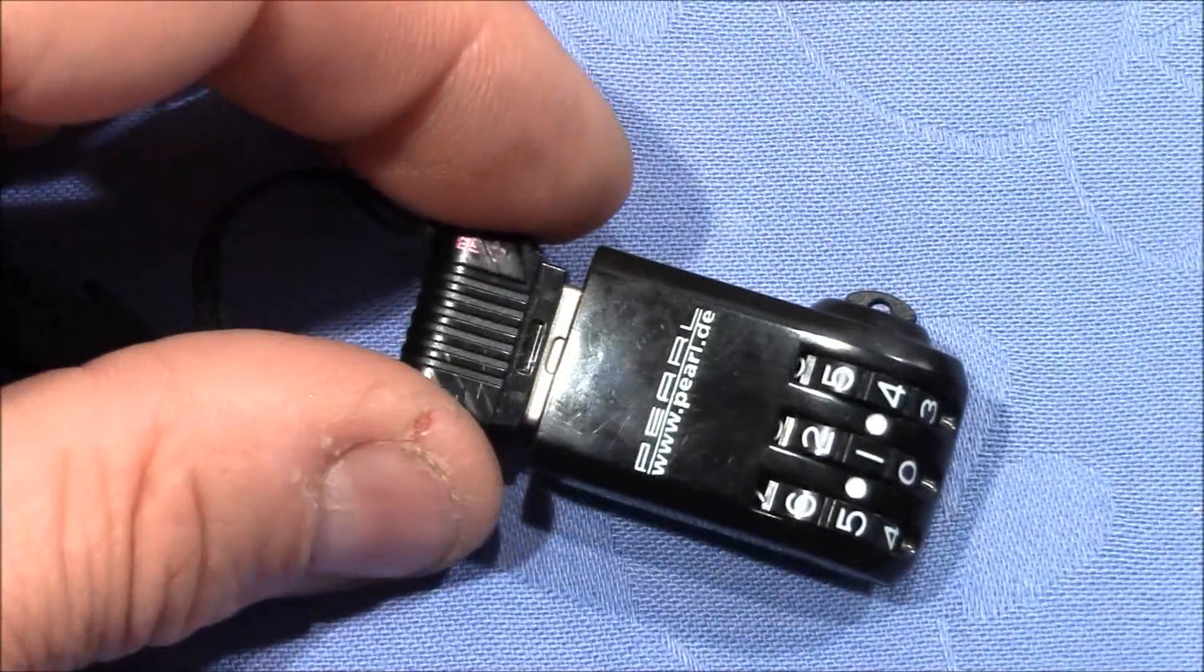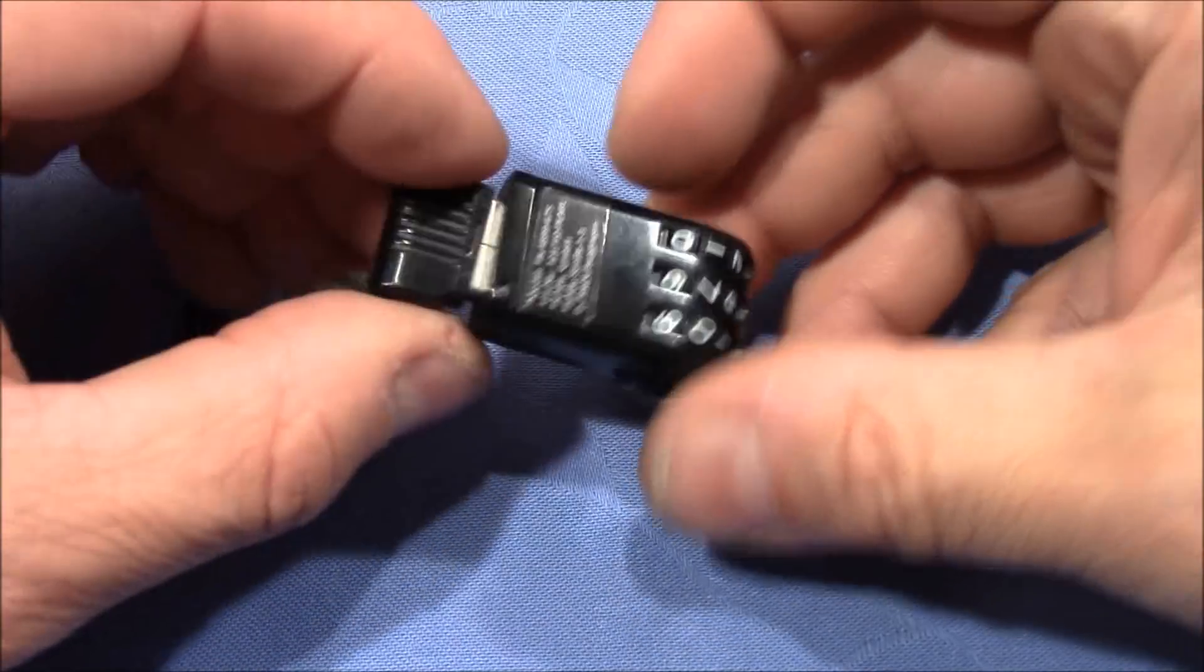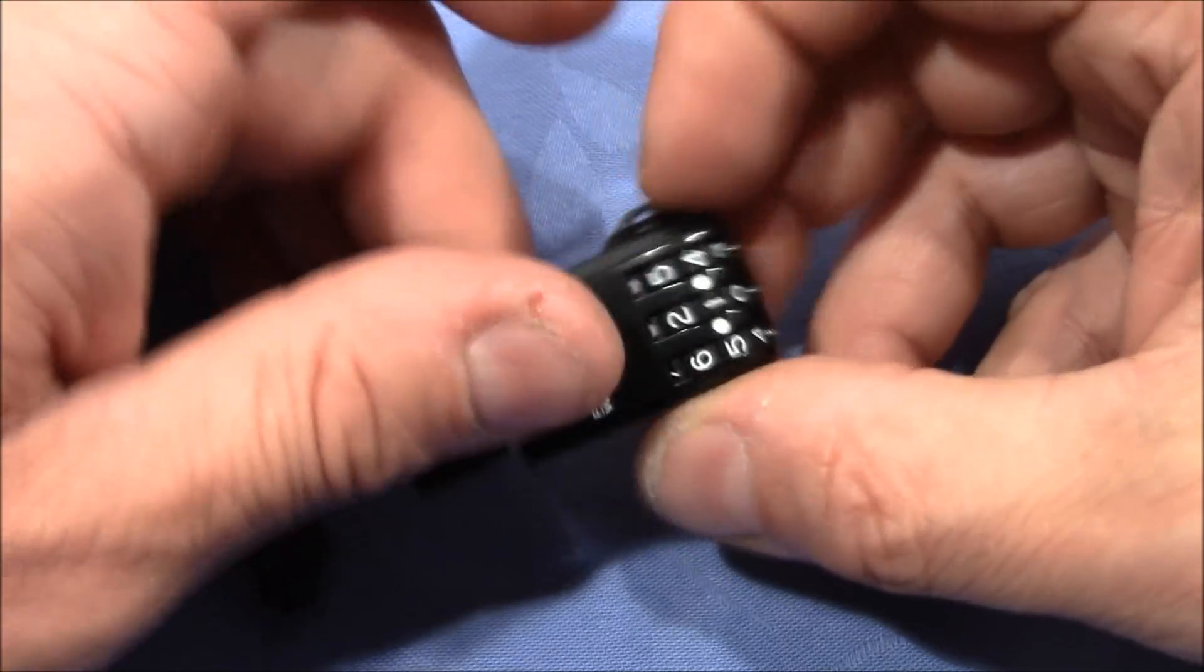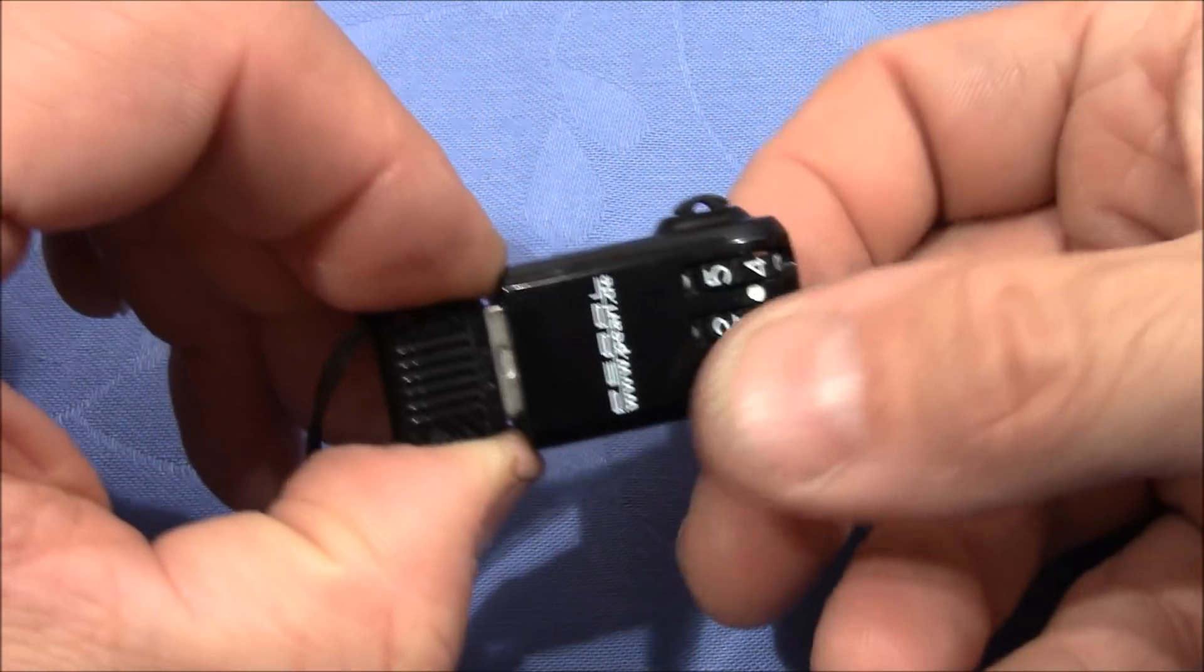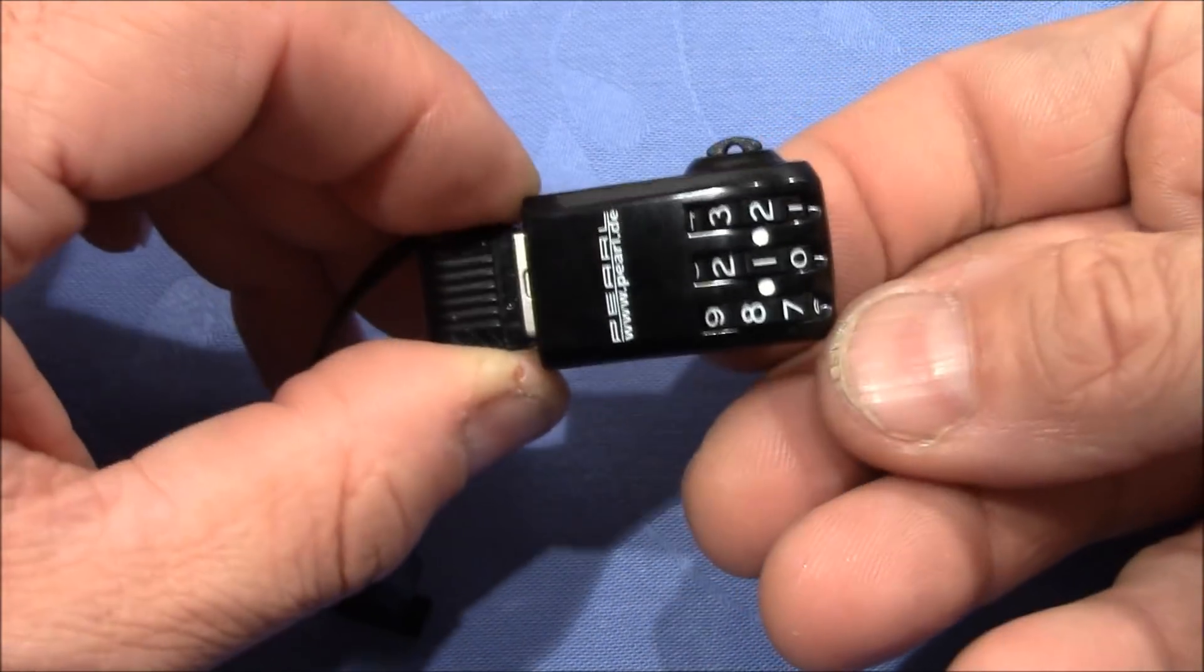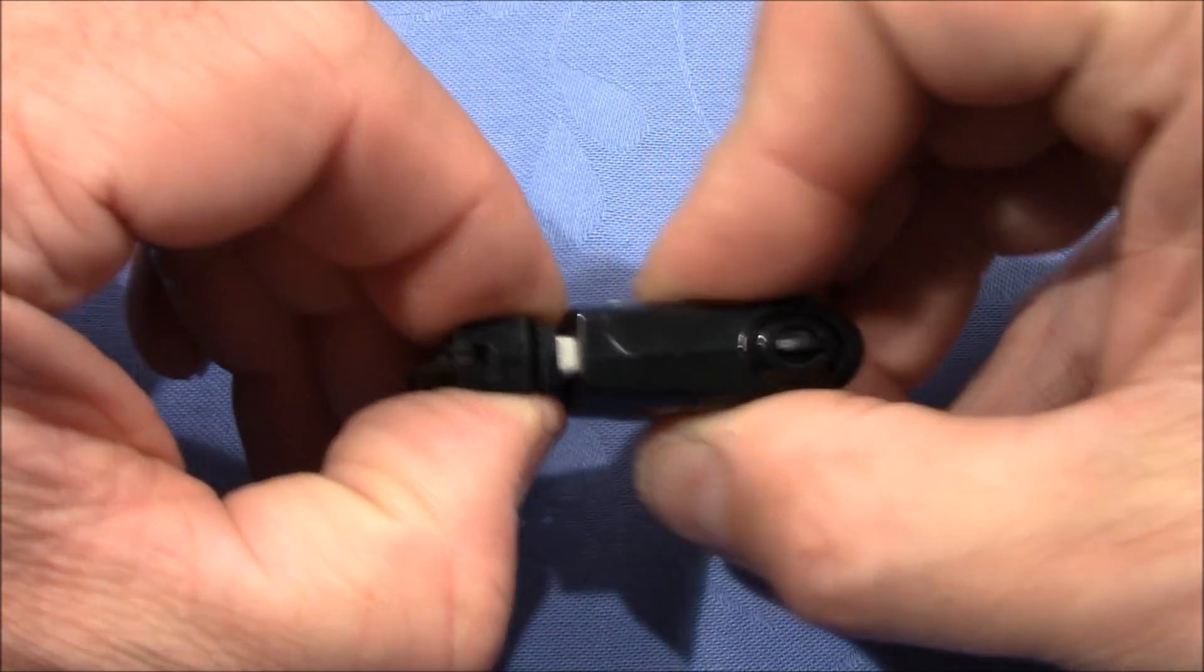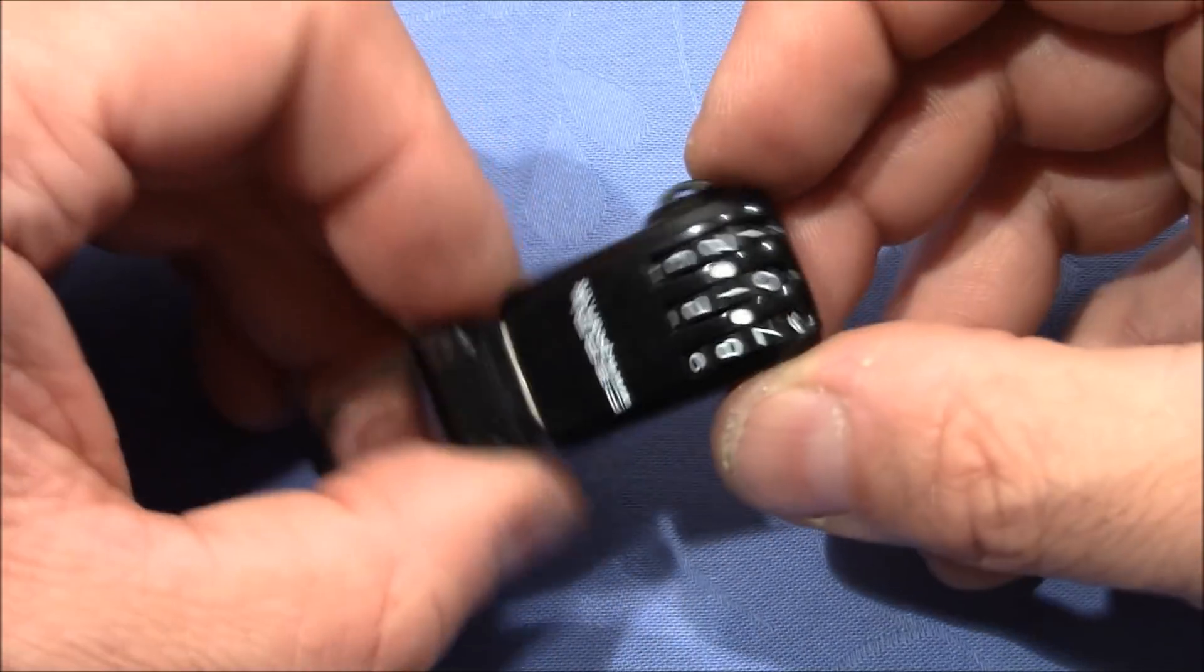Of course, we want to try to get this lock open without knowing the combination, but it's not susceptible to the pull-picking method. No matter how hard I pull on the USB stick, you cannot feel any change of resistance on the wheels, and that's because by pulling on the USB stick you do not tension a locking mechanism.